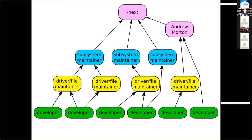Patches go from the developer to driver/file maintainer, then to subsystem maintainer, then to linux-next. If you want to see what's going to happen to the next kernel, run linux-next. If you have build problems, warnings, or boot issues, let us know — as developers and maintainers it all works for us, but if it doesn't work for you, we don't know to fix it. If you want to get involved, work off either the subsystem tree or linux-next, not Linus's tree directly.